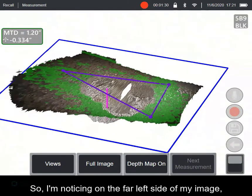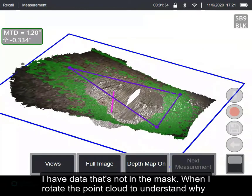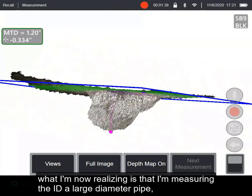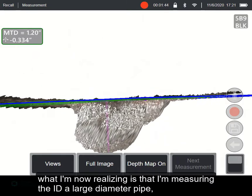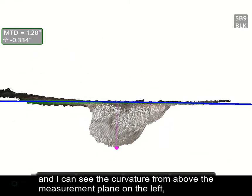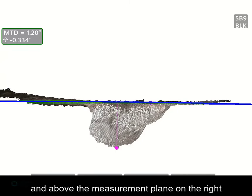So I'm noticing on the far left side of my image, I have data that's not in the mask. When I rotate the point cloud to understand why, what I'm now realizing is that I'm measuring the ID of a large diameter pipe, and I can see the curvature from above the measurement plane on the left, going down to the measurement plane in the center line, and above the measurement plane on the right.